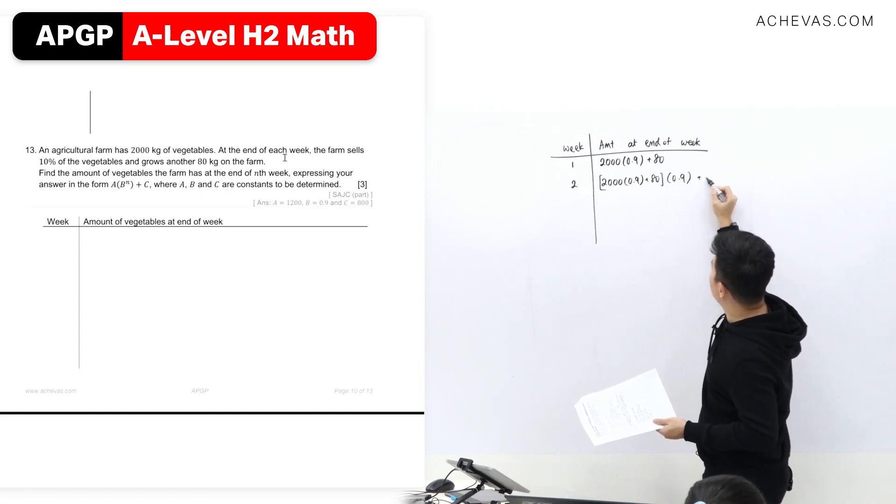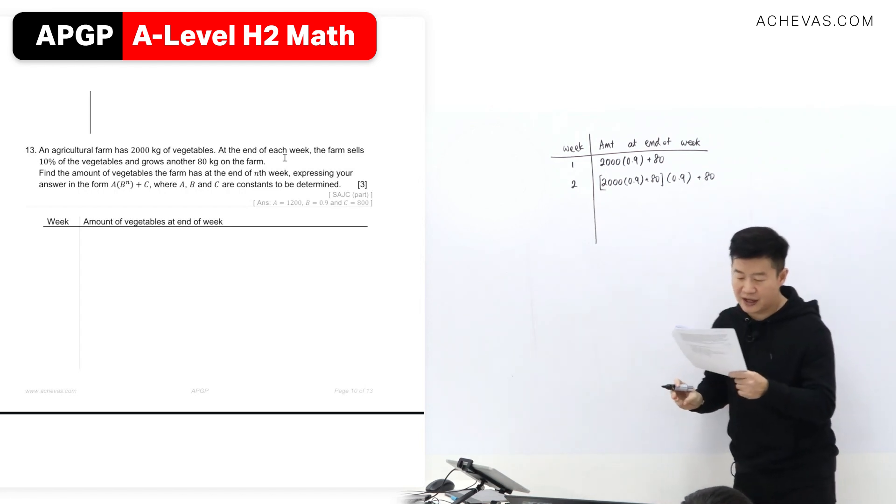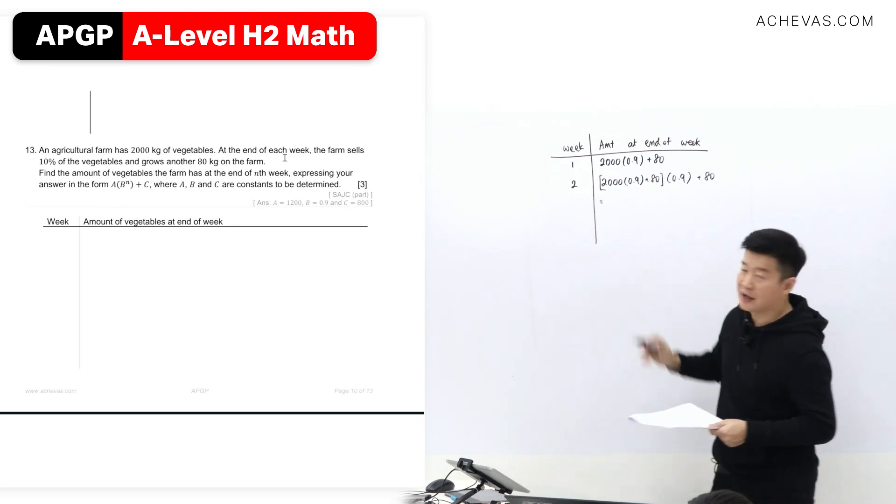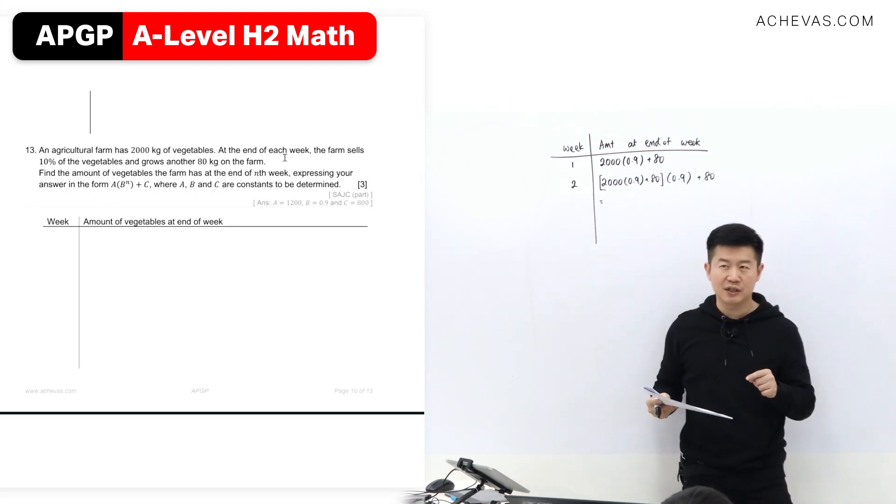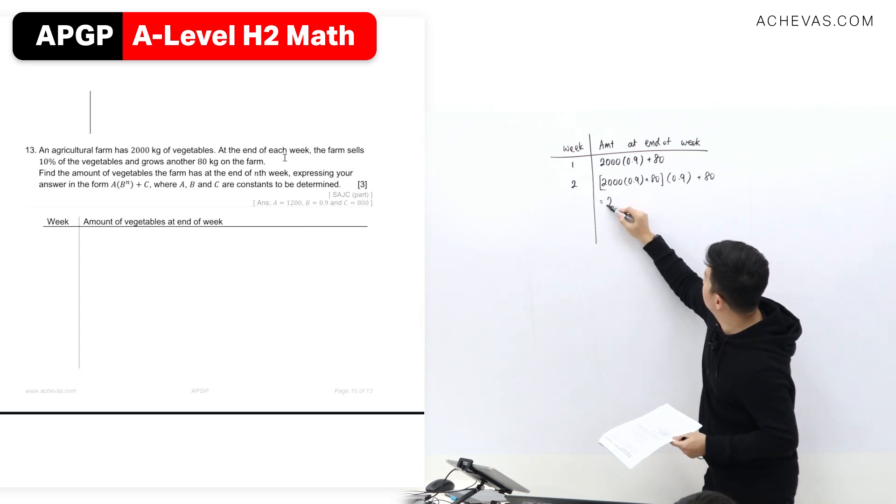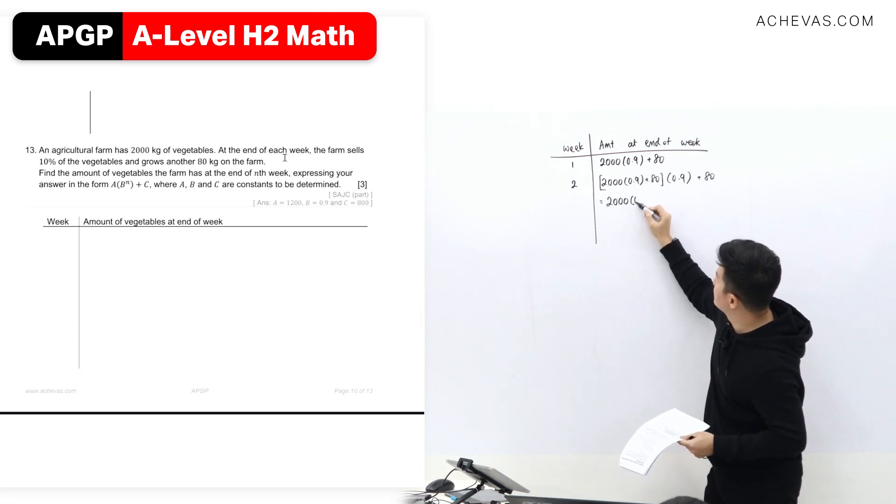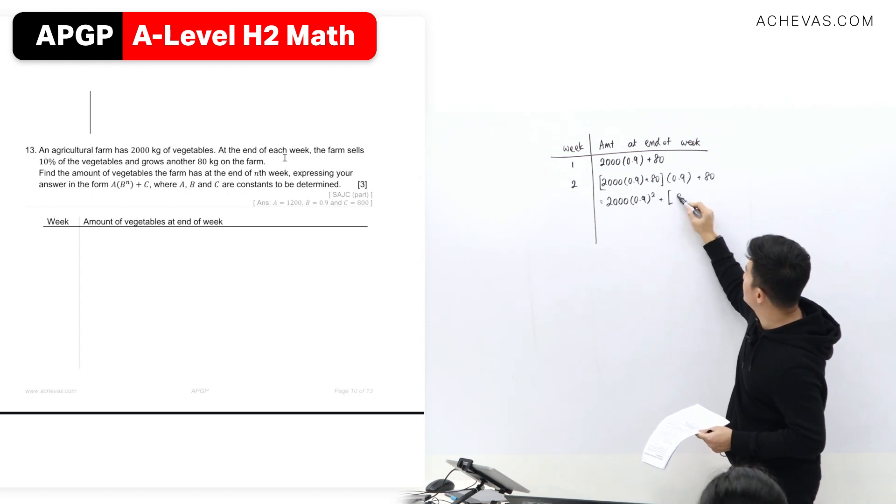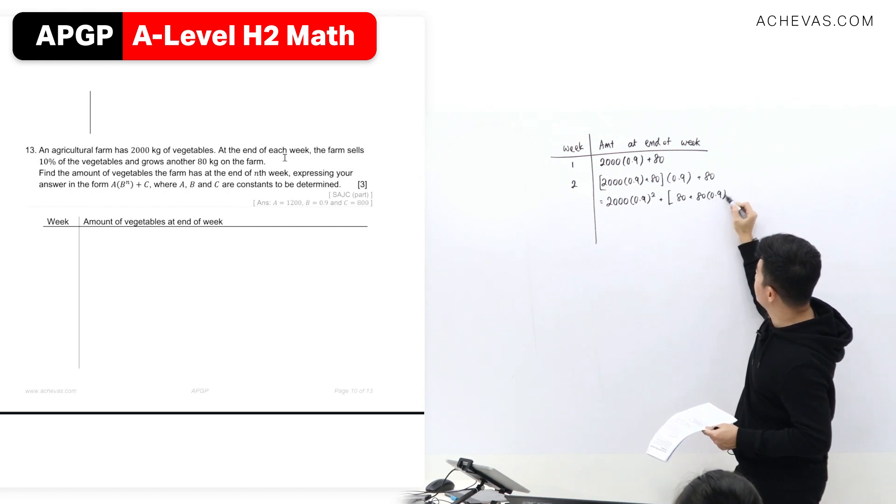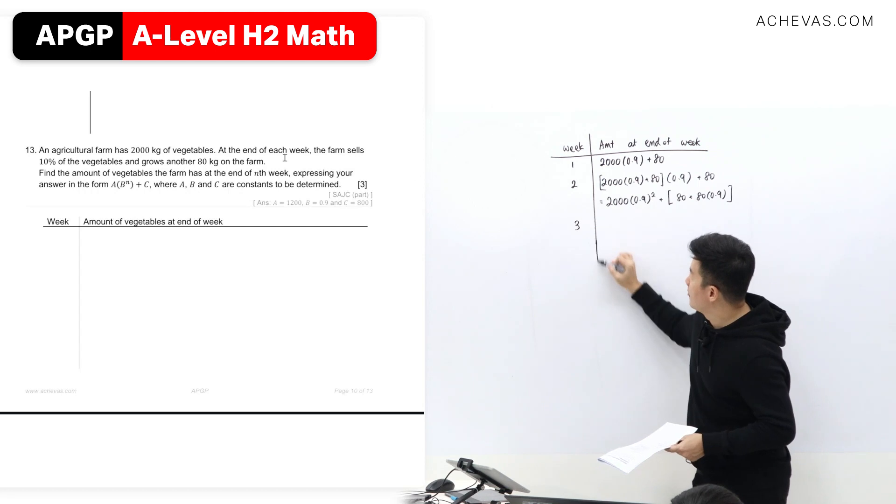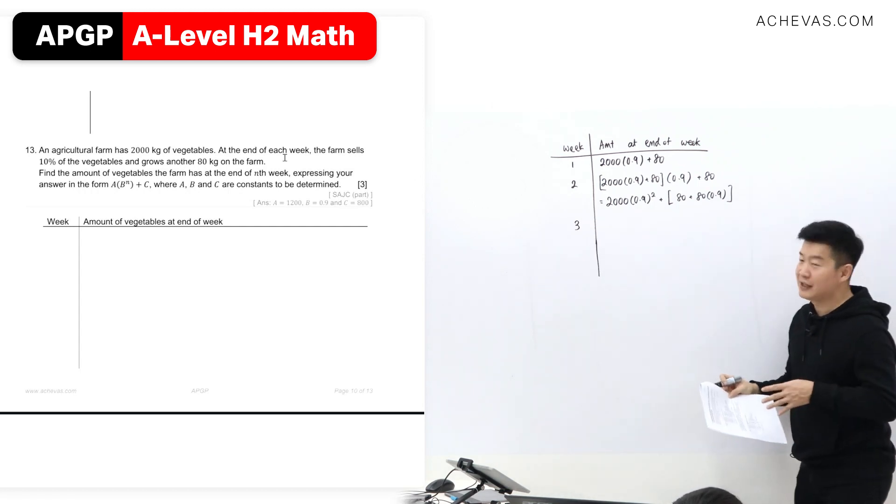10% is going to be sold and the farmer is going to grow another 80 kg of it. I think I'm going to start to categorize them without changing the numbers that are given to me as much as possible first. So I think it is going to be like this: 0.9 squared plus, I will put this 80 and 80 multiplied by 0.9 together.